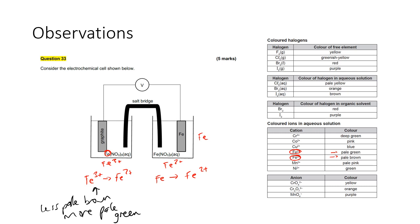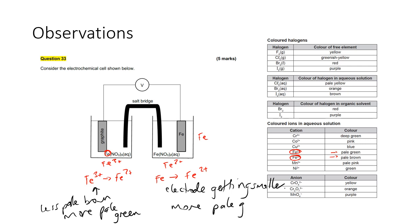On the other side, the electrode is getting smaller because the metal is going into solution, and the solution is getting more pale green.